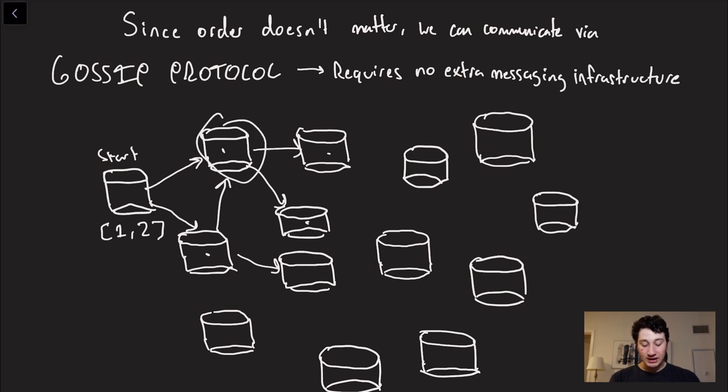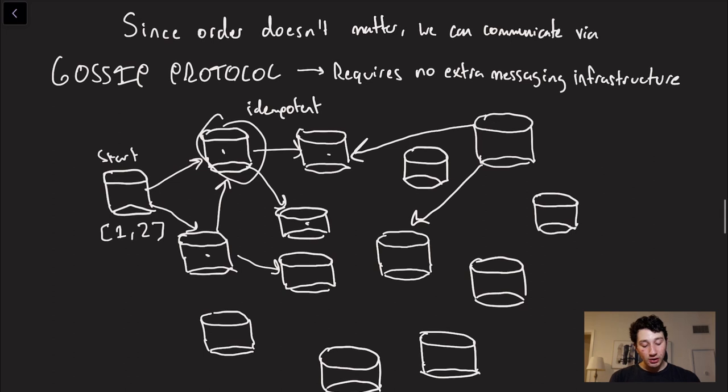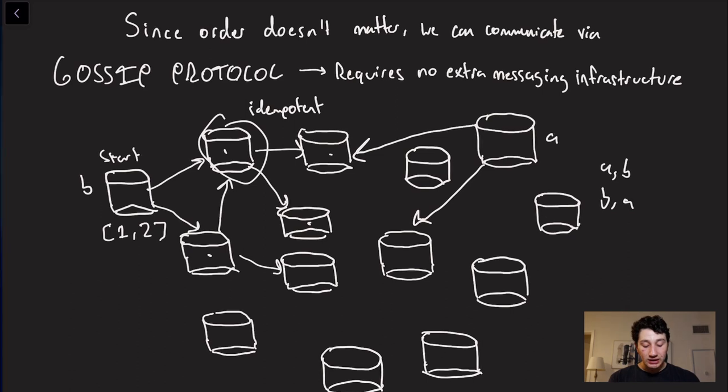And similarly, you know, maybe it'll send it here. It doesn't matter if this guy receives the message twice because, remember, it is idempotent. So receiving that message twice is no big deal. Similarly, you know, if we had another guy sending messages because it has its own counter-update to send out, it doesn't matter whether, let's call this message A and message B, it doesn't matter whether A gets there before B or B gets there before A because the merge function is commutative.